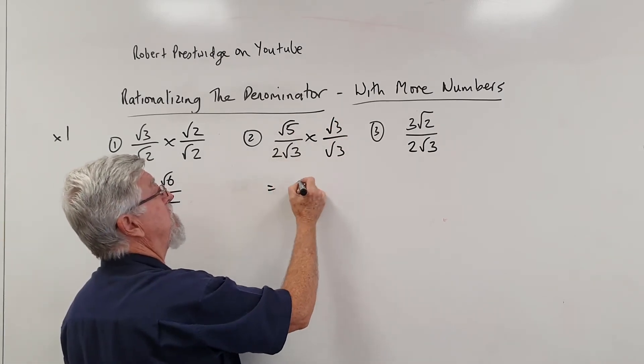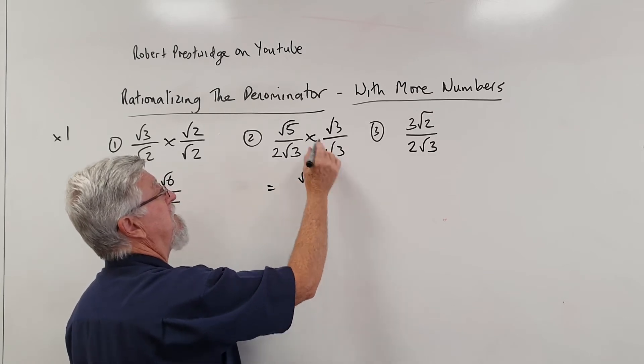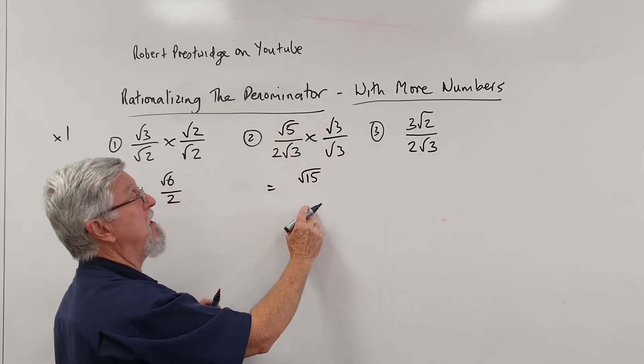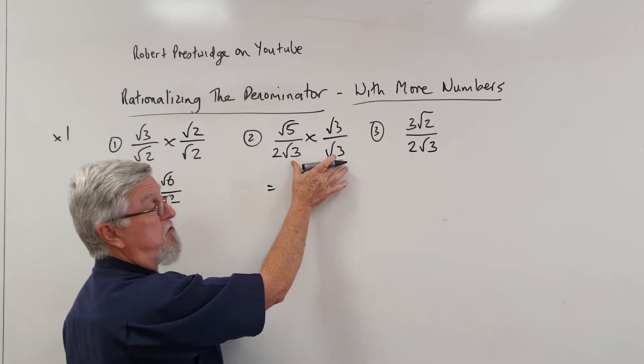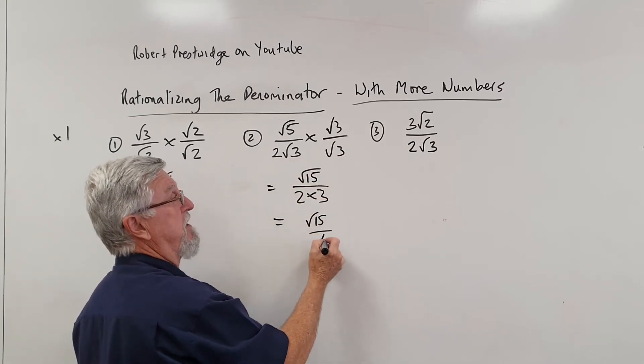So the top becomes root 15. The insides can multiply. Now the trick here is you've got a 2 multiplied by root 9, which is just a 3. So it's root 15 on 6.